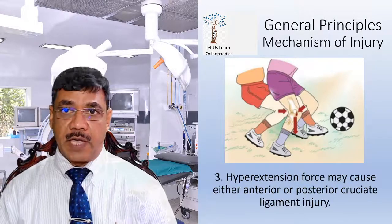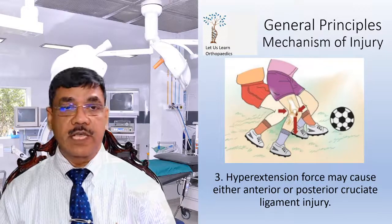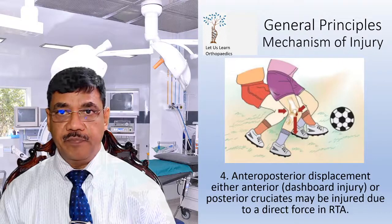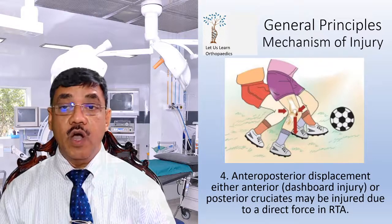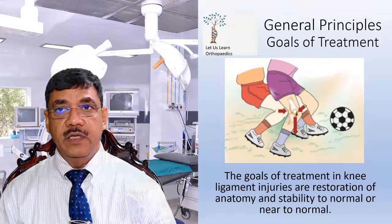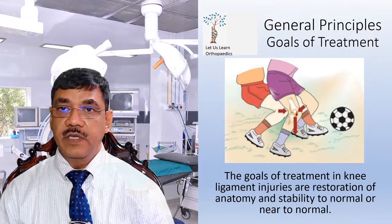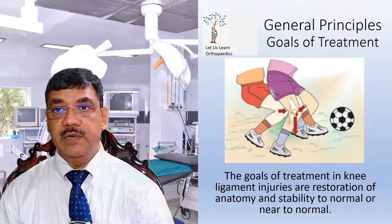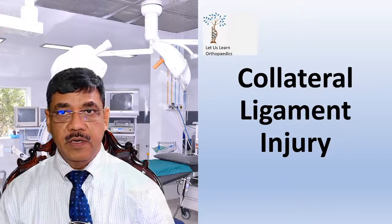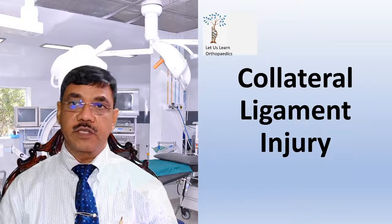The third mechanism is a hyperextension force, which may cause either anterior or posterior cruciate ligament injuries. The fourth mechanism is anterior-posterior displacement: either the anterior cruciate or posterior cruciate may be injured due to a direct force in a road traffic accident, such as a dashboard injury. The goals of treatment in knee ligament injuries are restoration of anatomy and stability to normal or near to normal. With these general considerations, let us start the discussion on collateral ligament injuries.